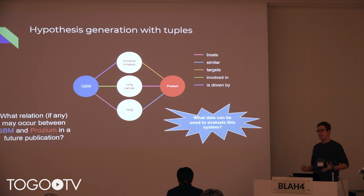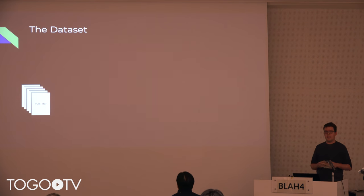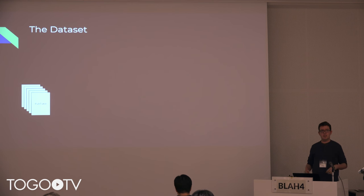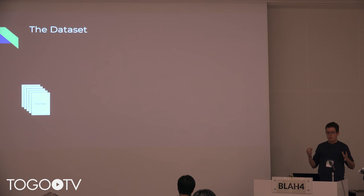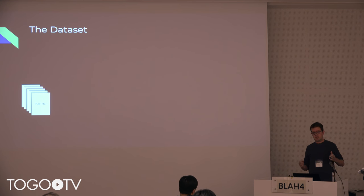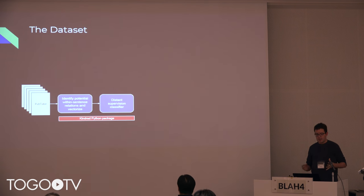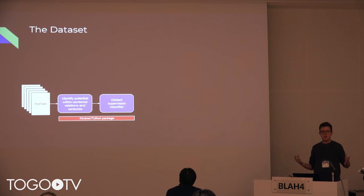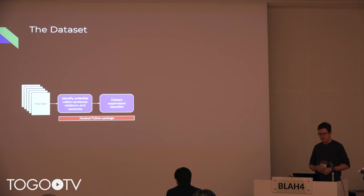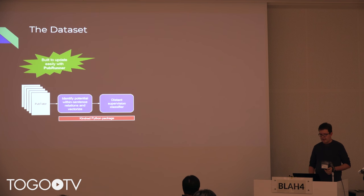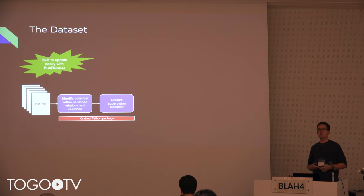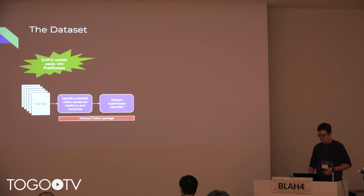Getting data to evaluate these systems is quite tricky, so we've created a dataset to play with in this hackathon. We took the PubTator corpus of all of PubMed — which has a lot of different entity annotations — identified all within-sentence potential relations, vectorized them, and applied a distant supervision classification approach. This is based on a relation extraction package called Kindred that we built in our lab. Another tool we built is PubRunner, which makes it easy to run things across all of PubMed and keep them up to date, minimizing computation and handling format conversions.